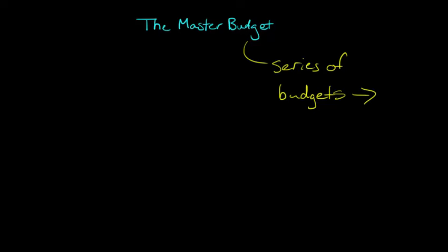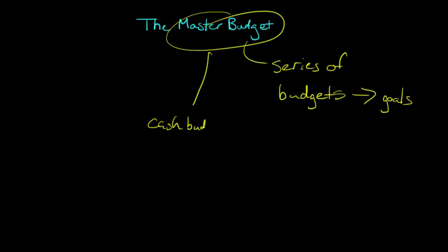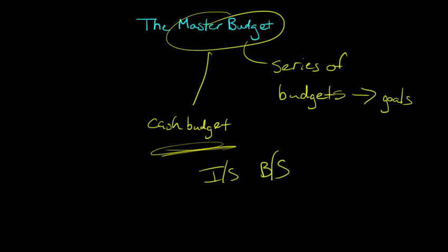This series of budgets deals with the firm's goals and how the firm is going to get there. Ultimately, the output of the master budgeting process is a cash budget — which is really important for determining whether we have enough money to make it through the different quarters during the year. Maybe we're a seasonal business that does most of its sales in the fourth quarter for retail holiday shopping. We also produce a budgeted income statement and a budgeted balance sheet as the final output of this master budgeting process.